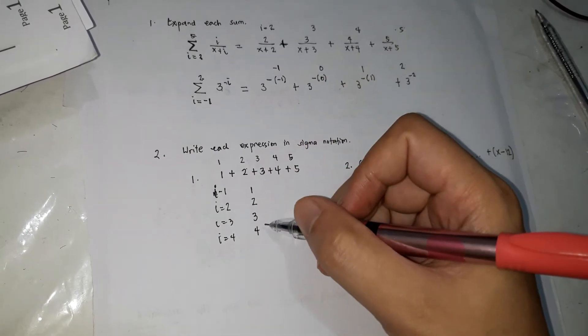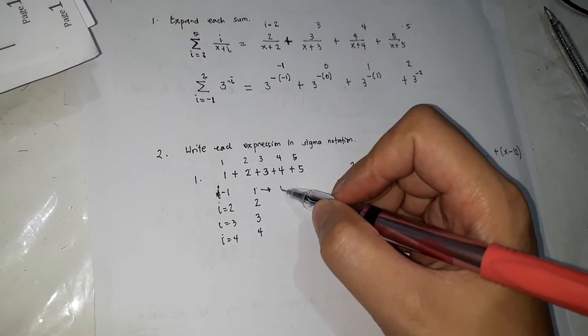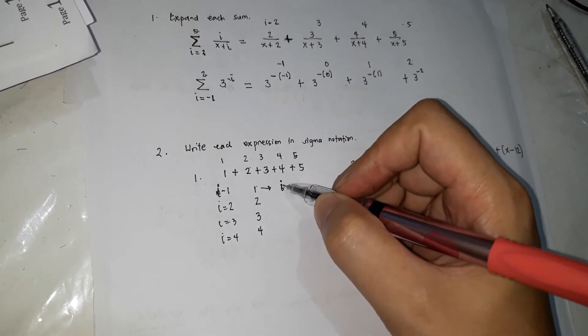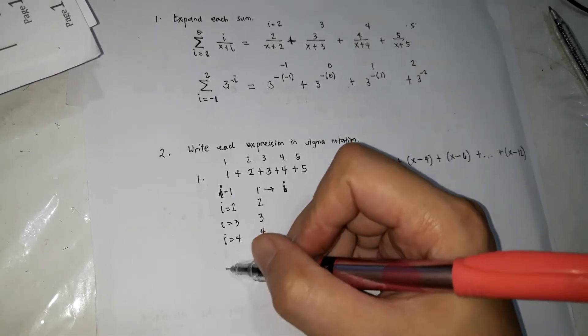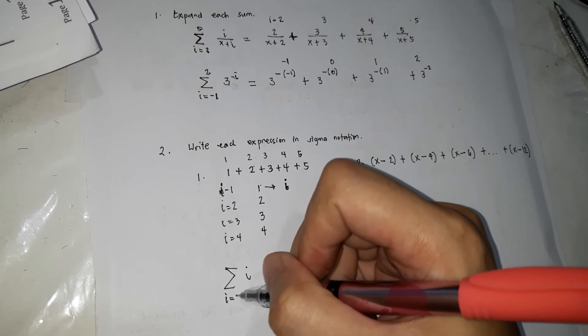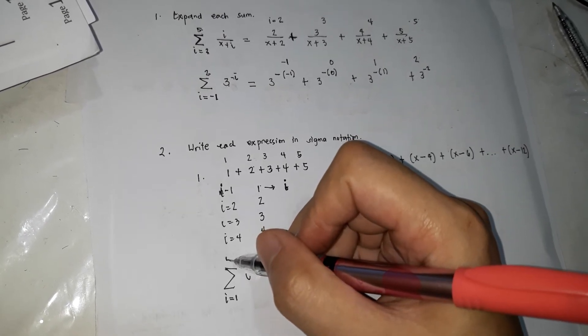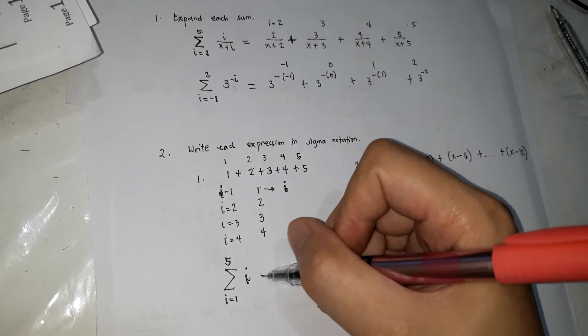So ibig sabihin, ang value dito, pwede mo siyang palitan ng i. So the formula is i lang. Kasi, kung nabaw akong summation of i, tapos ang i nag-start sa 1 patungong 5. Kasi kung ang i, ibig sabihin, yan siyang value niya.